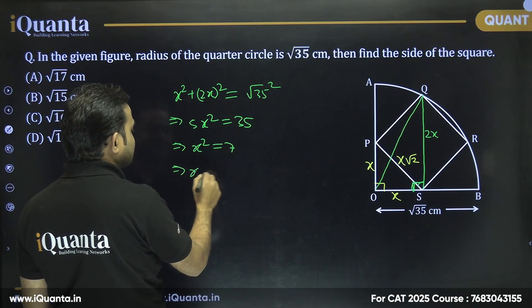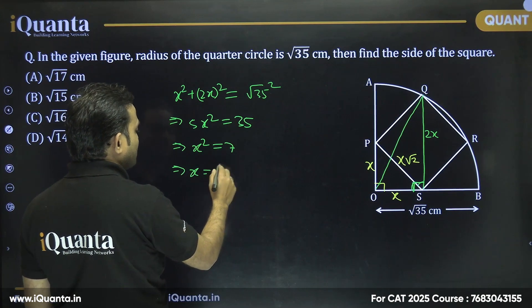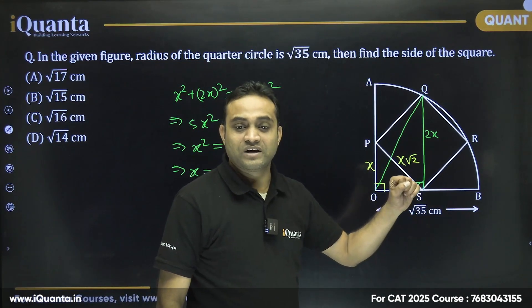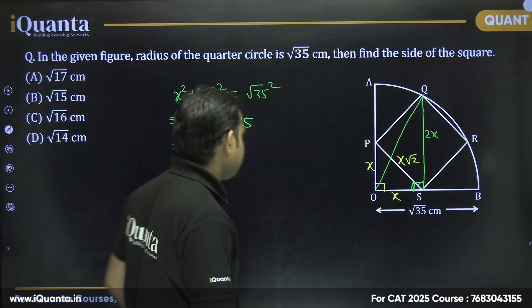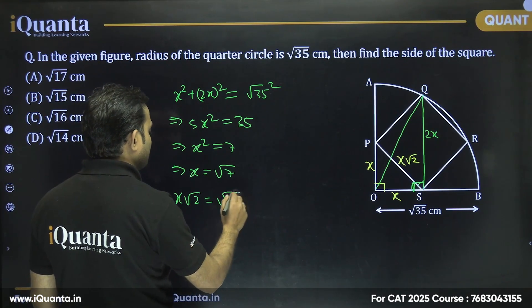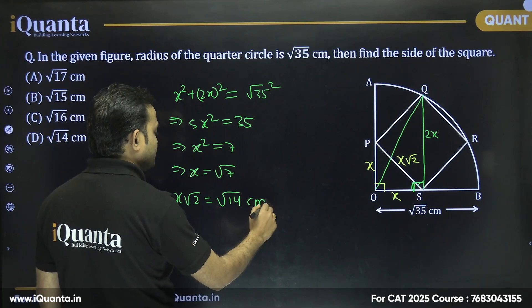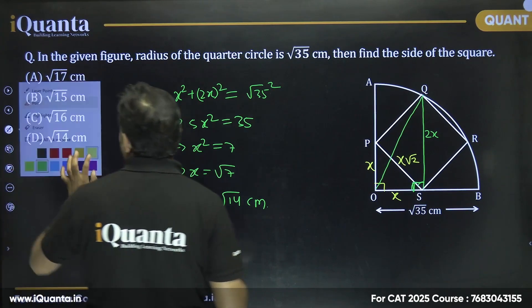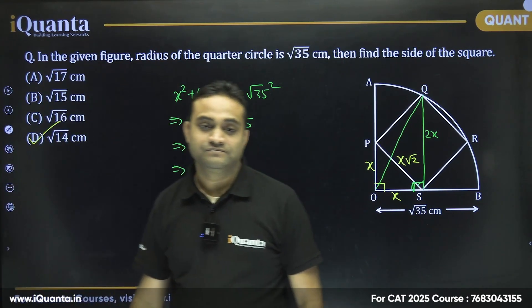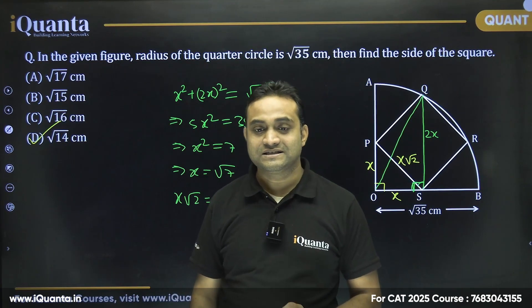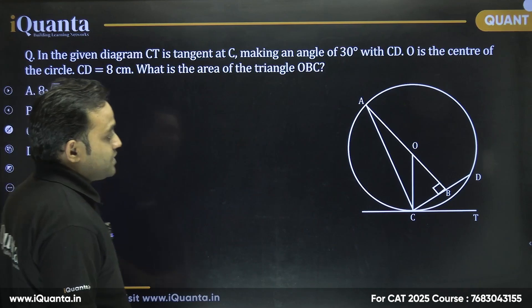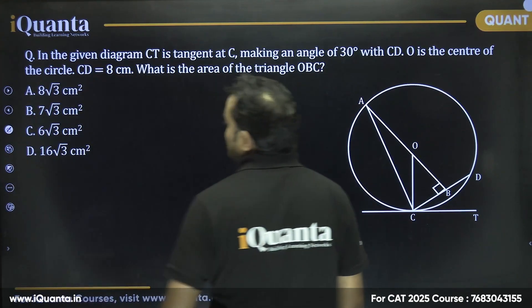OQ is the radius, so 5X² = (√35)² = 35, giving X² = 7 and X = √7. The side length PS = X√2 = √14 cm. So the answer is option D: √14 cm.